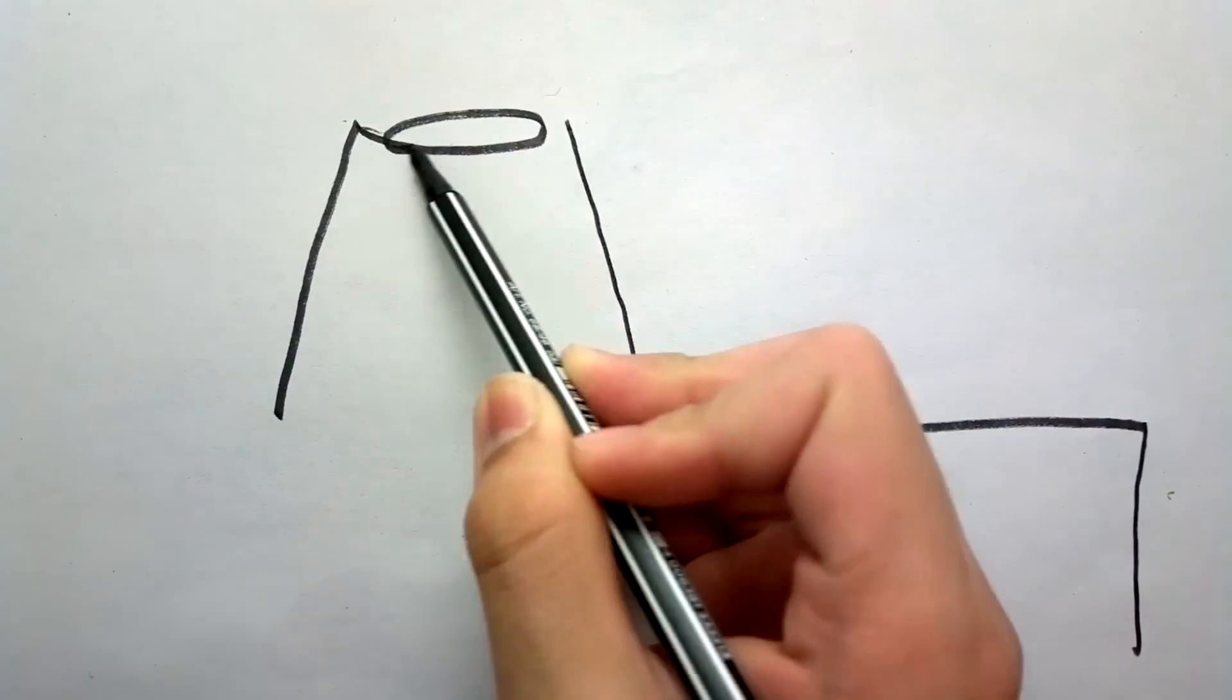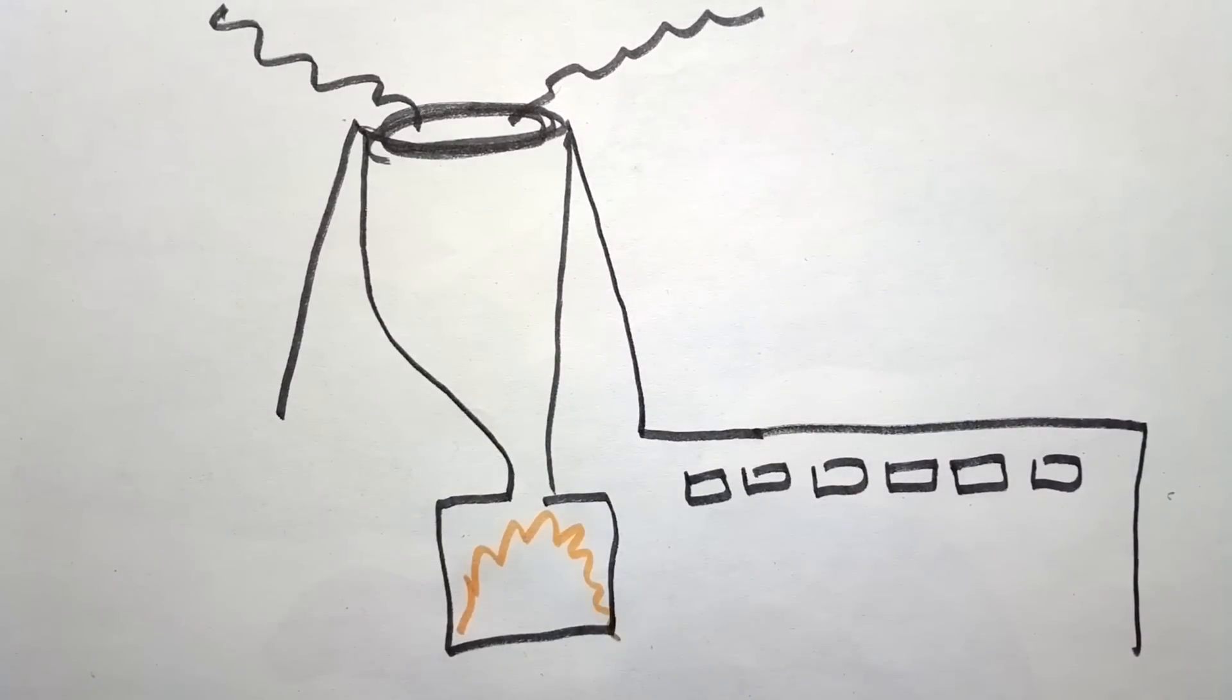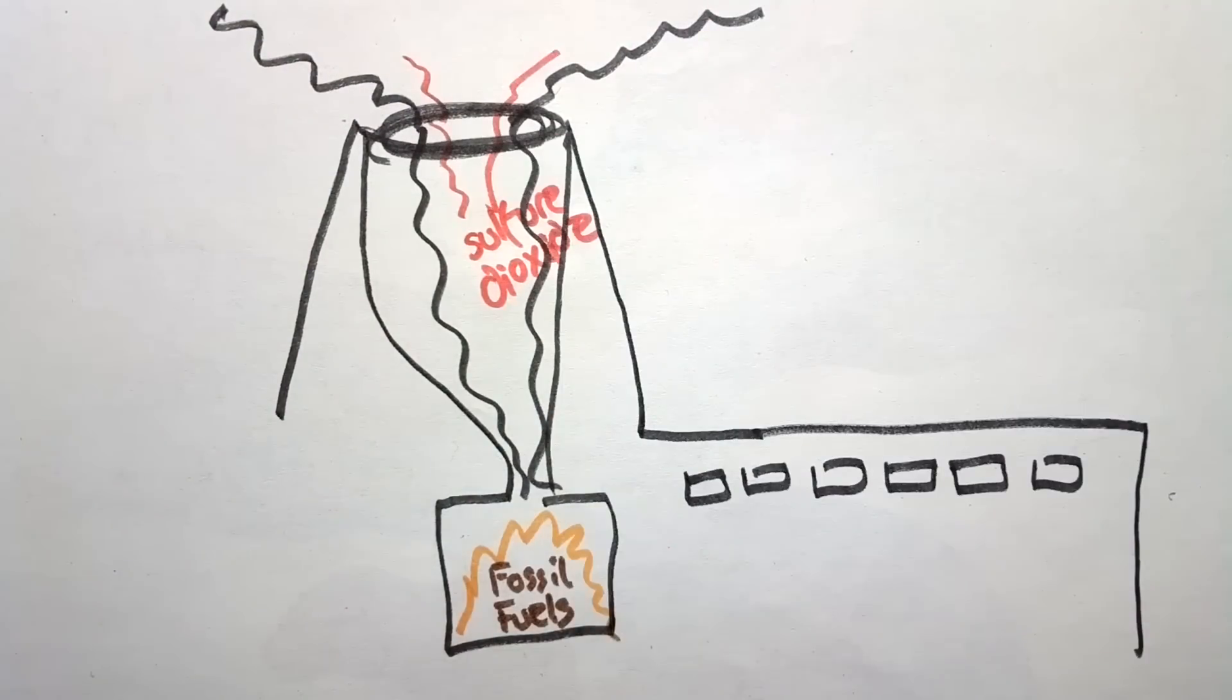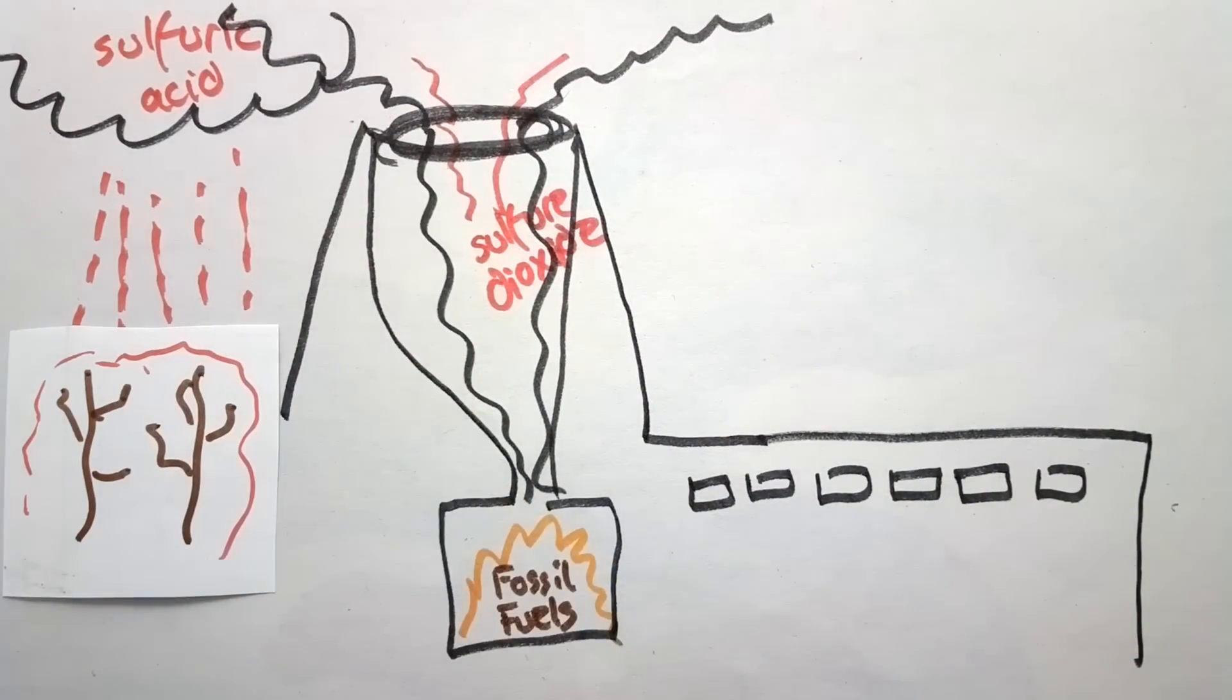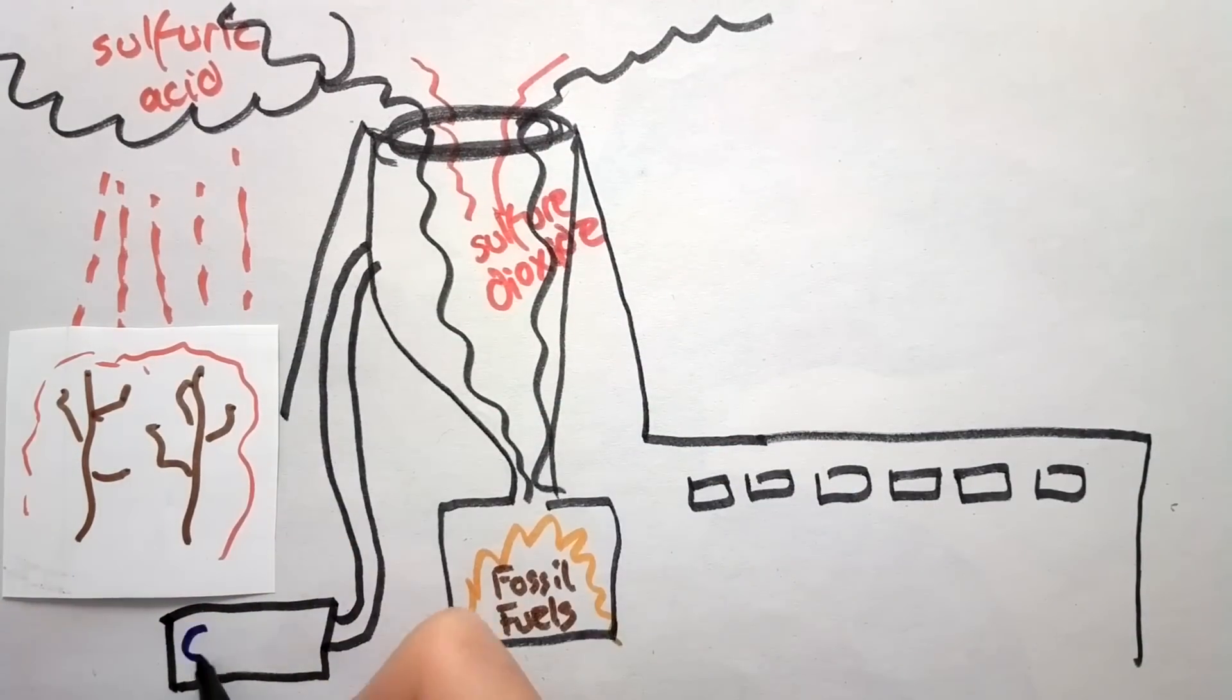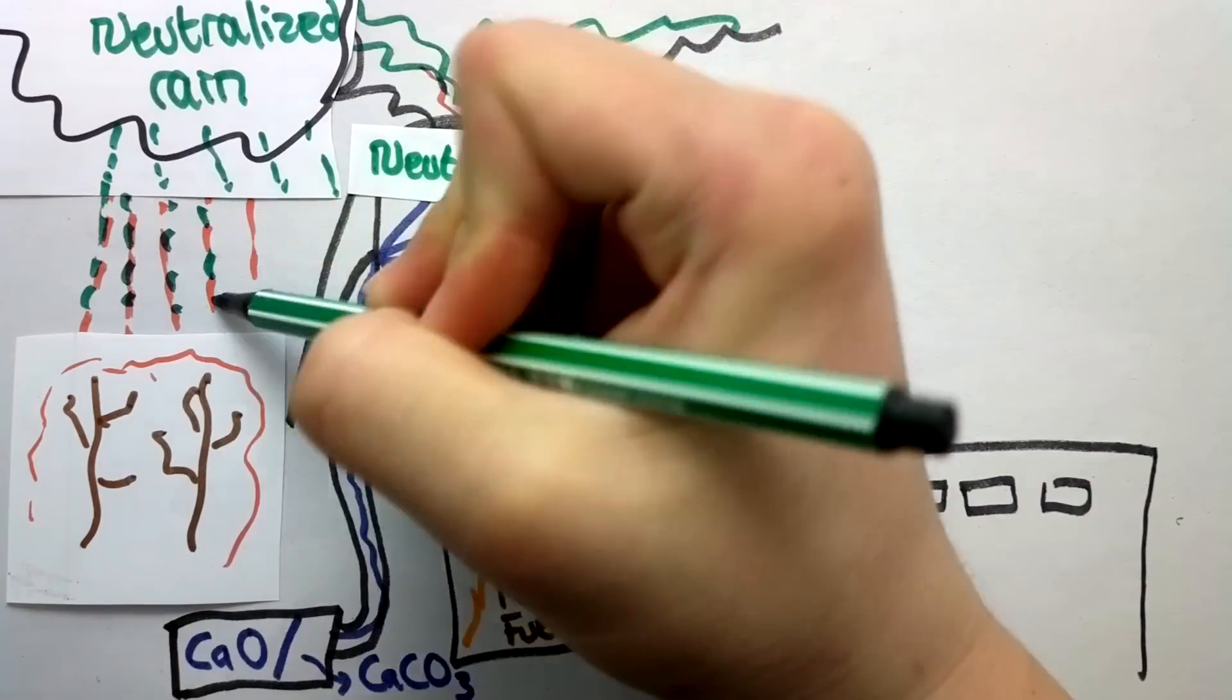In energy industry, power stations burn fossil fuels, such as coal, to produce electricity. The burning fossil fuels will liberate sulfur dioxide gas as an acidic pollutant in the air. Hence, power stations treat this acidic gas using powdered lime or limestone to neutralize it, so that air pollution can be prevented.